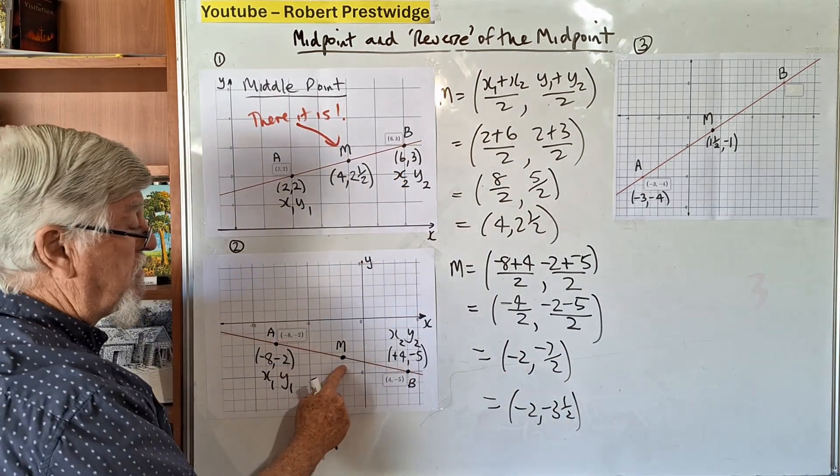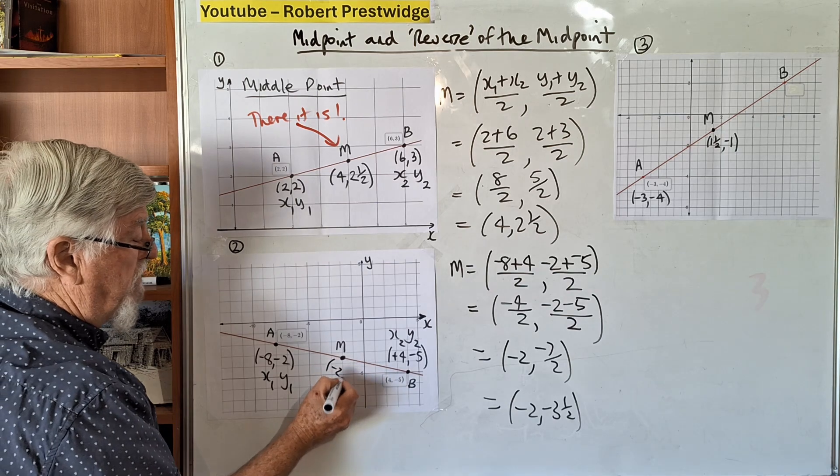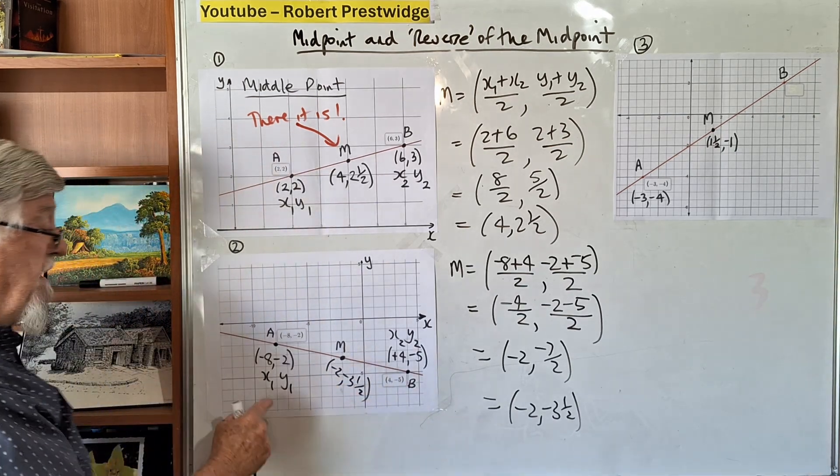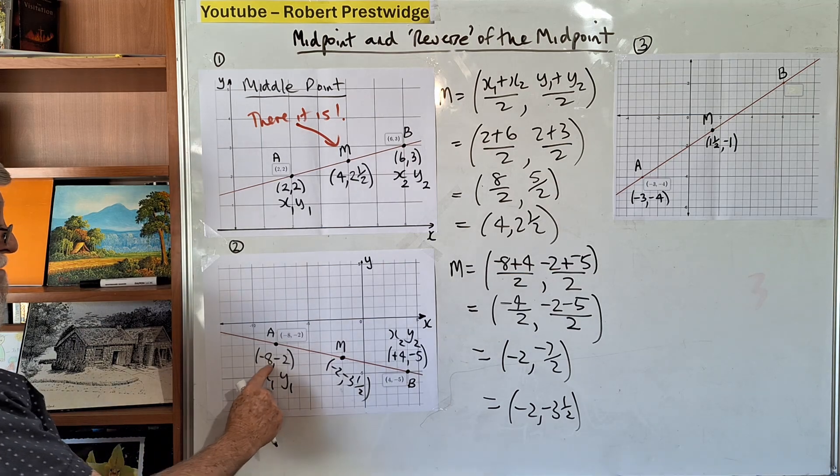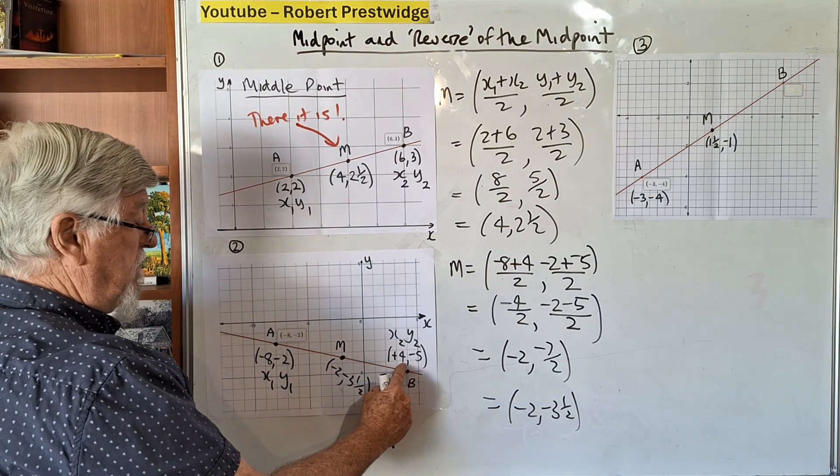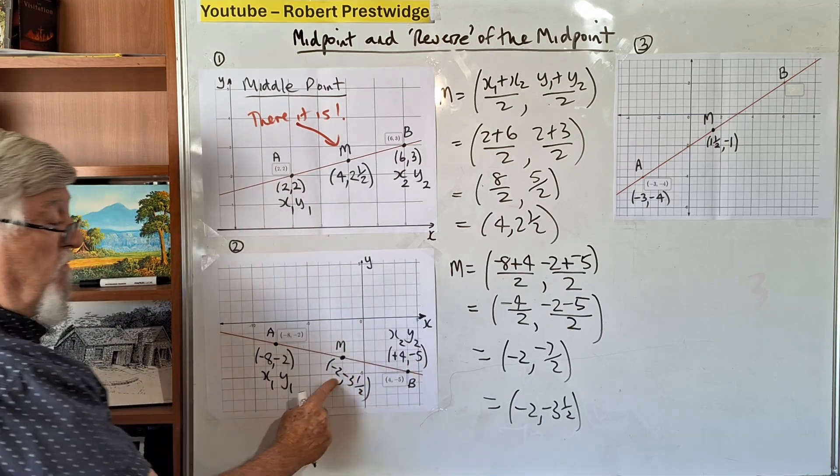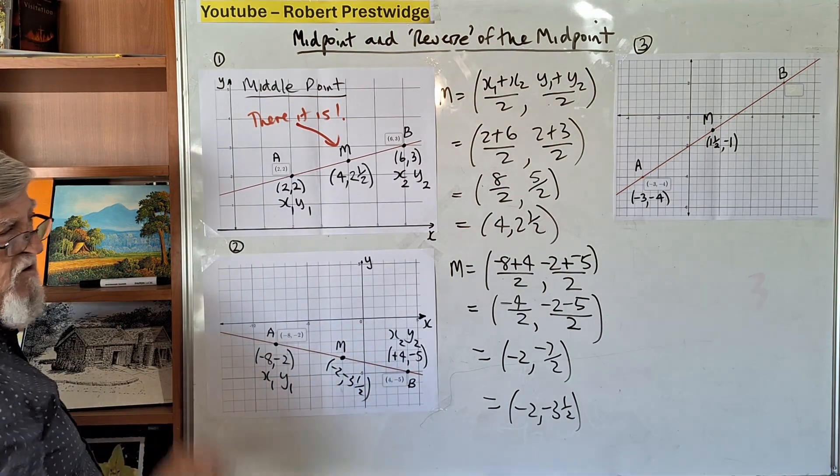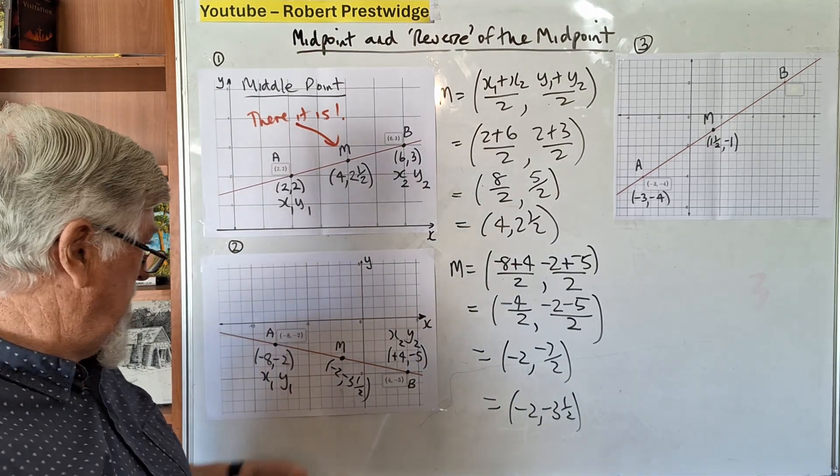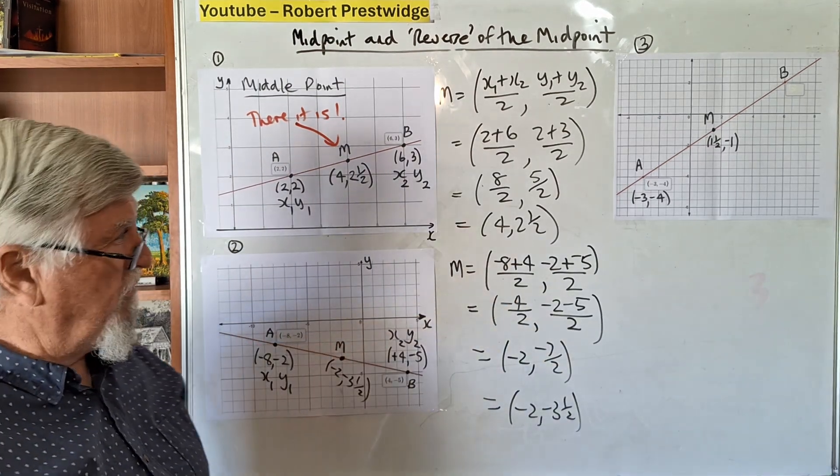You could look over here and figure out it's -2 and -3.5. Halfway between -8 and 4 you could figure out is -2. I was really good at mental arithmetic, but I normally put things in the formula.